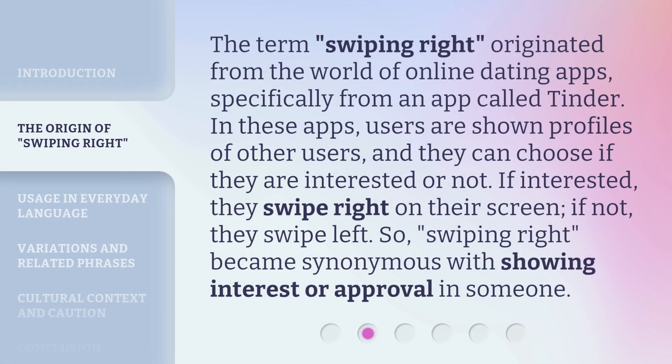The term 'Swiping Right' originated from the world of online dating apps, specifically from an app called Tinder. In these apps, users are shown profiles of other users, and they can choose if they are interested or not. If interested, they swipe right on their screen; if not, they swipe left. So 'Swiping Right' became synonymous with showing interest or approval in someone.